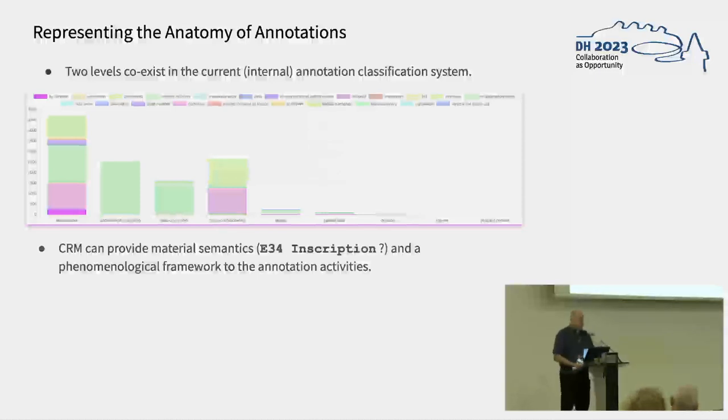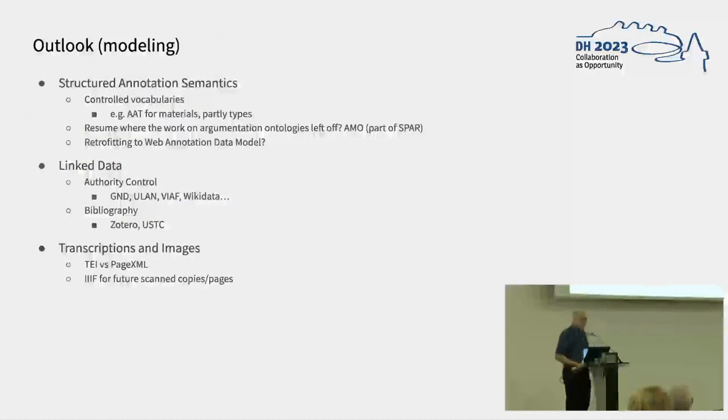And this is being challenging for us because the variability of annotations is more than the web annotation data model from W3C can honestly accommodate. So while we can retrofit into that, we should probably look into the argumentation model. Of course CIDOC CRM gives us the inscription framework for the phenomenology of annotations, but we have to consider bringing these together with the actual annotation data model, an argumentation data model of which an instance exists in the SPAR ontology, the AMO, but also domain entities, so actually a model of magnetism.